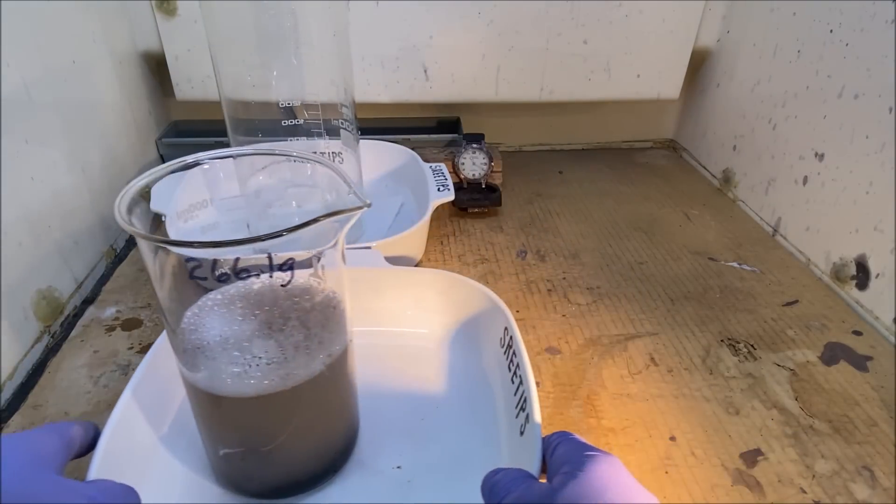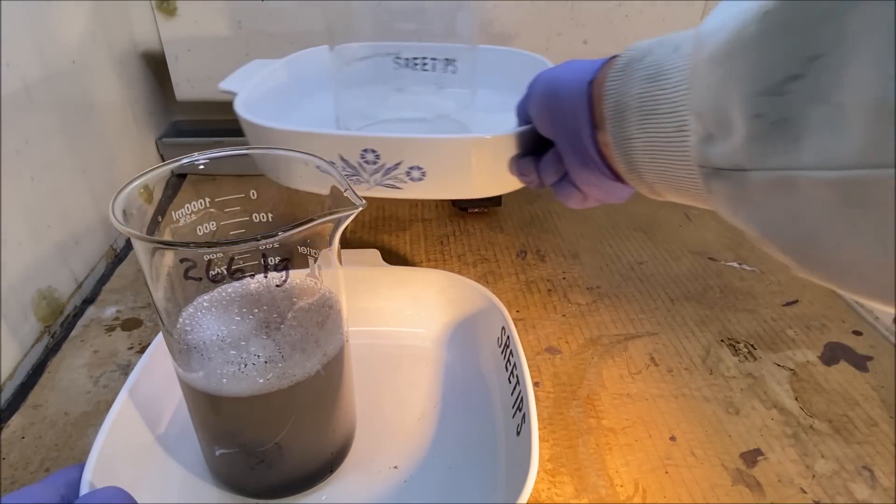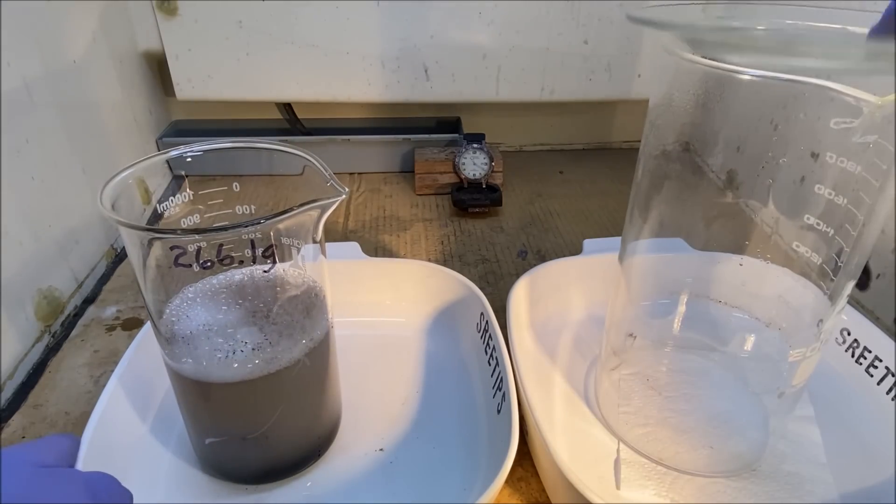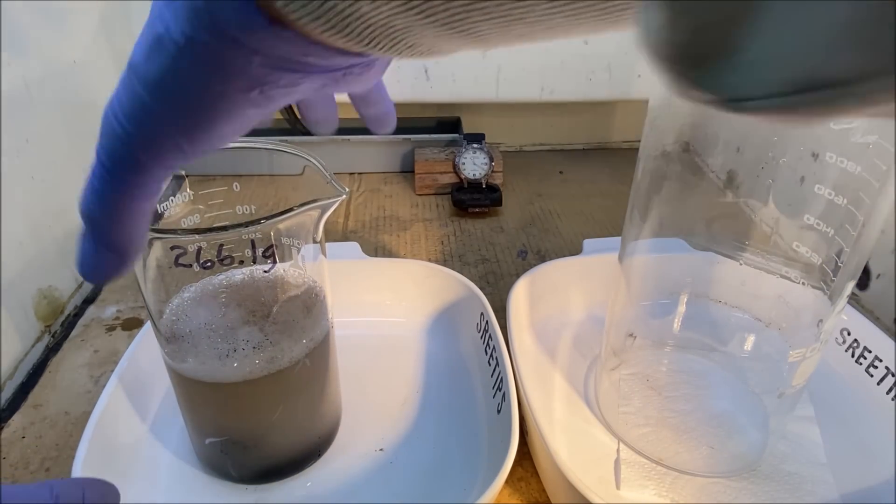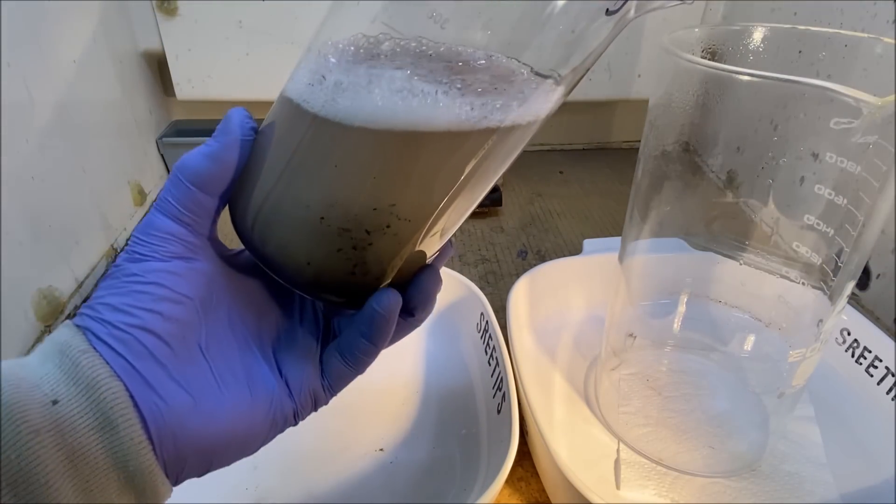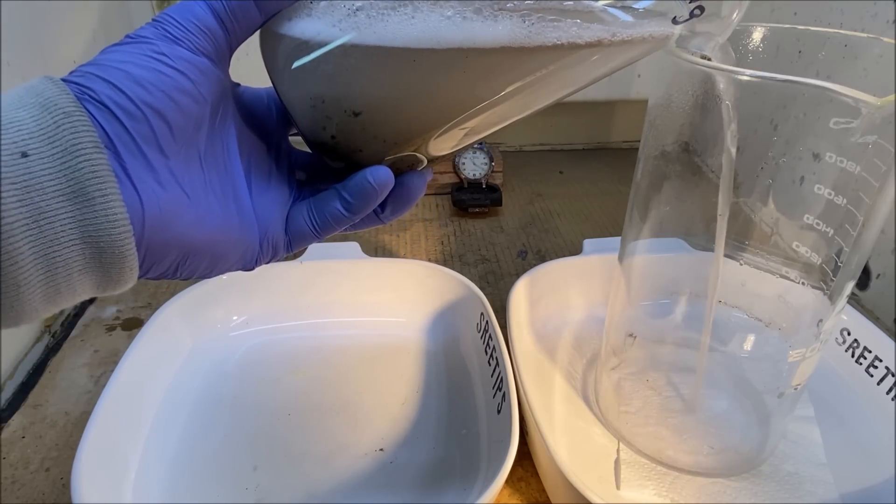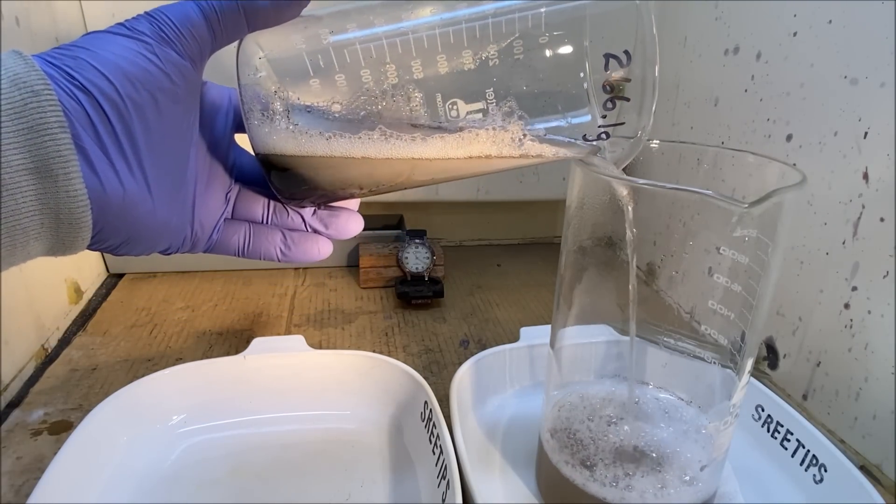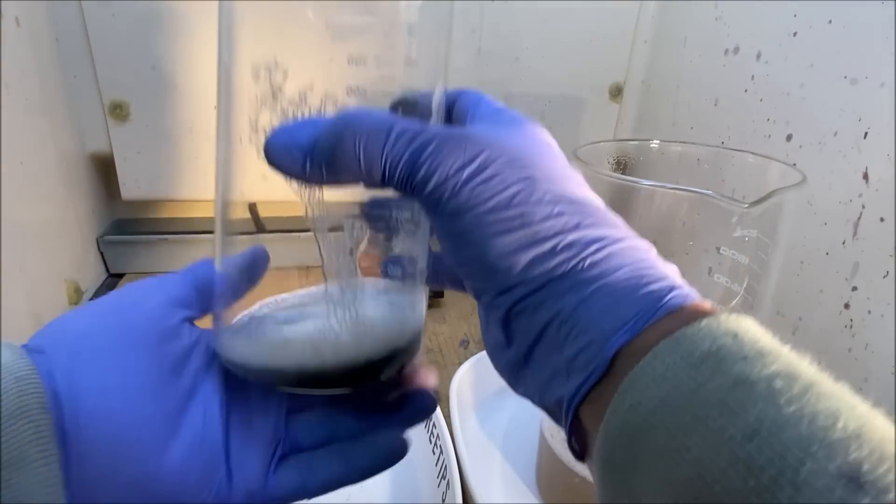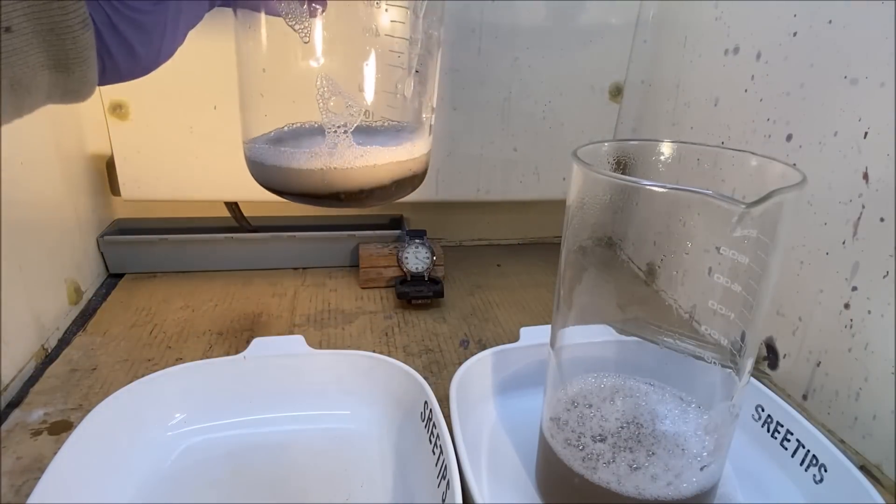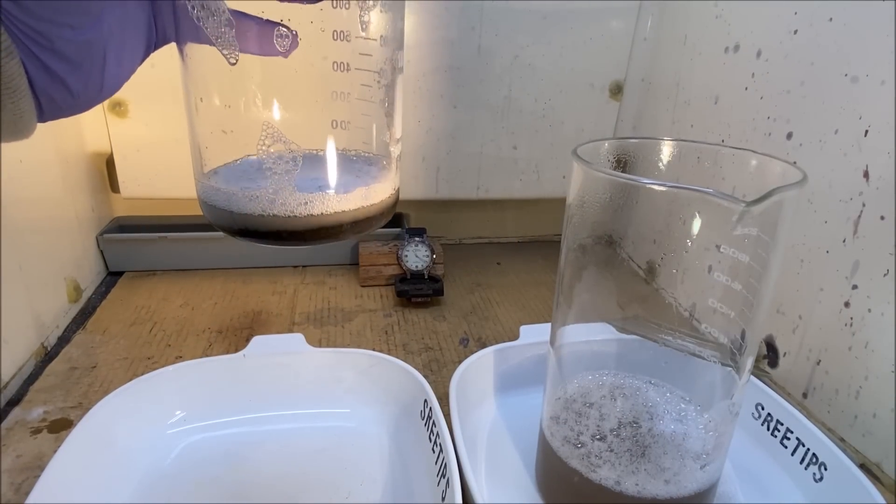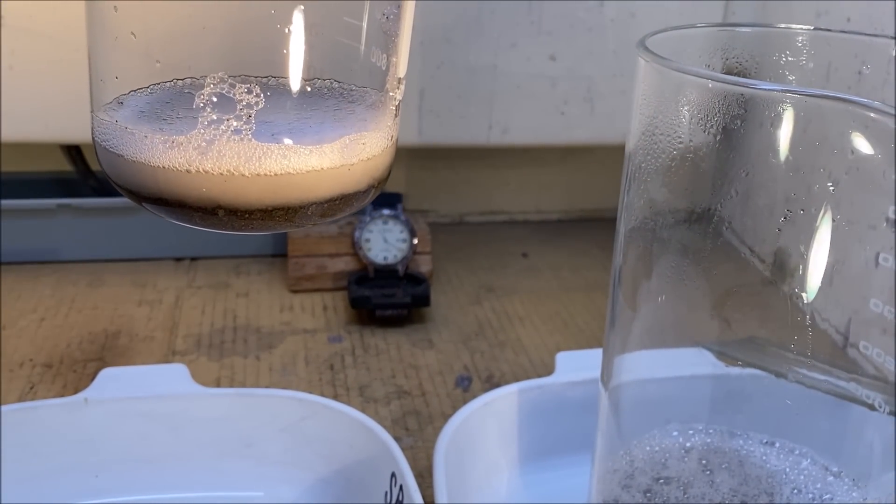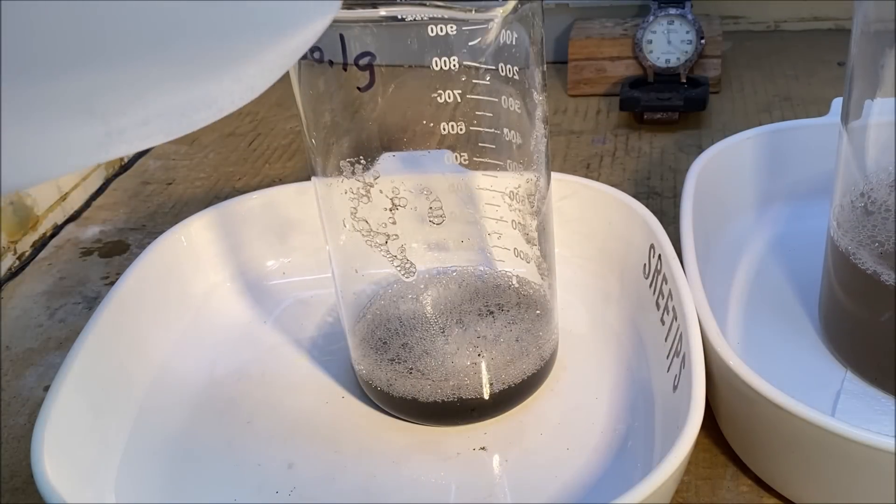I think you can see here that it's already starting to try to go back in solution in here. So I'm going to pour this liquid off of our metal, some of it anyway. Here's our metal down in the bottom of the beaker. Not very much. I'm going to add some distilled water to this.